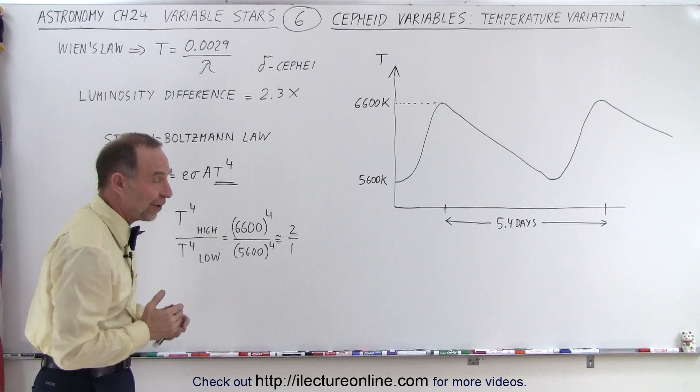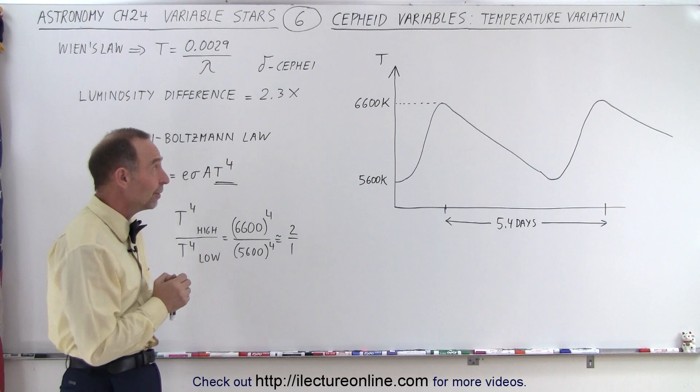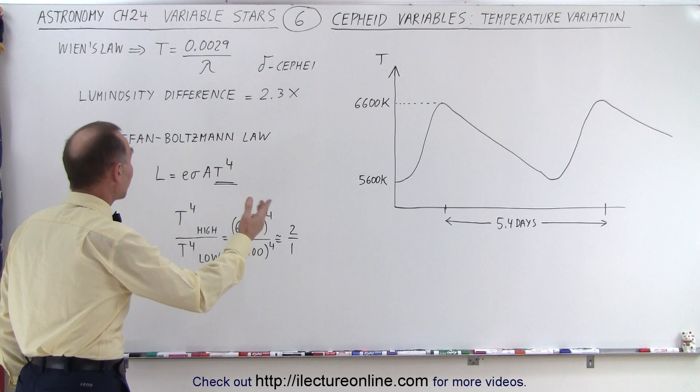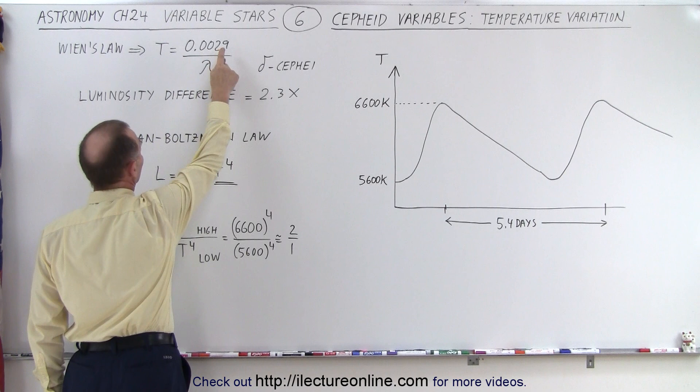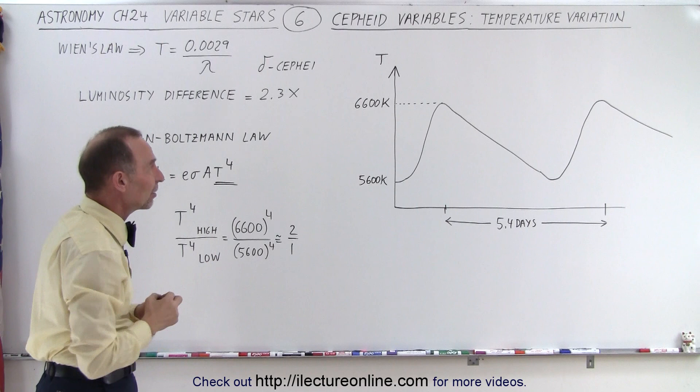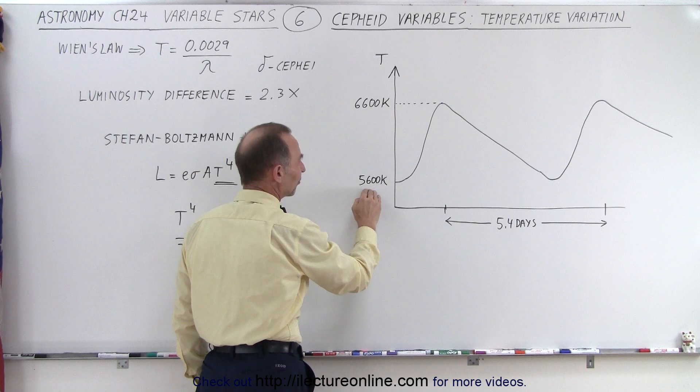So taking a look at Delta Cepheid, the first one of its kind that we found, of course now we have seen thousands and thousands of them, we take a look and we measure the wavelength coming from those stars, from that particular star, and using Wien's law, we can calculate the temperature by taking 0.0029 and dividing it by the wavelength, the peak wavelength coming from that star through its periodicity.